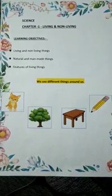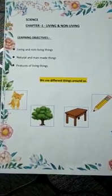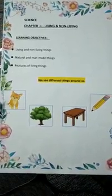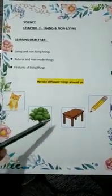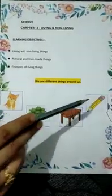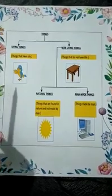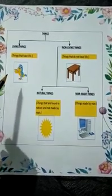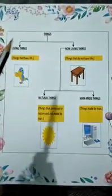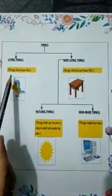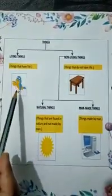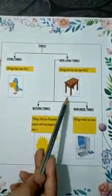We can see different things around us like animals, plants, furniture, pencil, etc. All the things that we see around us can be grouped as Living Things and Non-Living Things. Living Things are the ones that have life in them — for example, Bird. Non-Living Things do not have life in them — for example, Table.